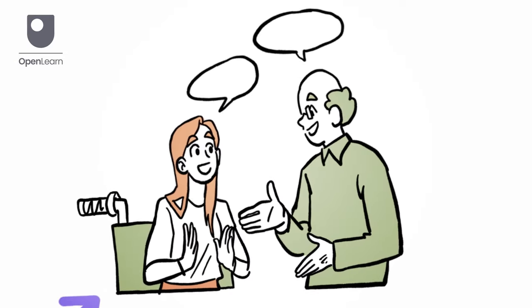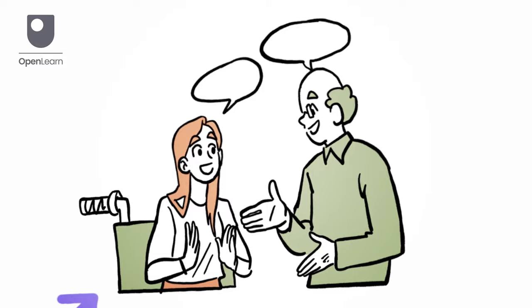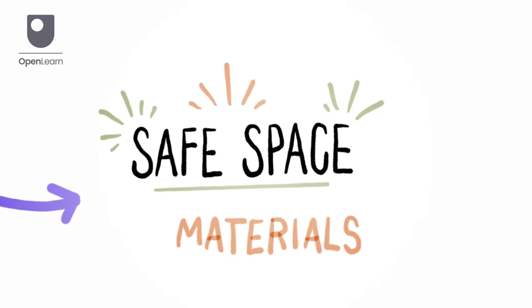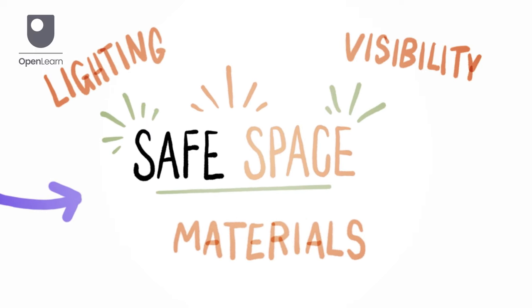For example, if a participant says, my priority is to create a safe space, it's important for the team to understand what safe means for that particular person, and how it relates to materials used, the organisation of space, lighting, visibility, etc.